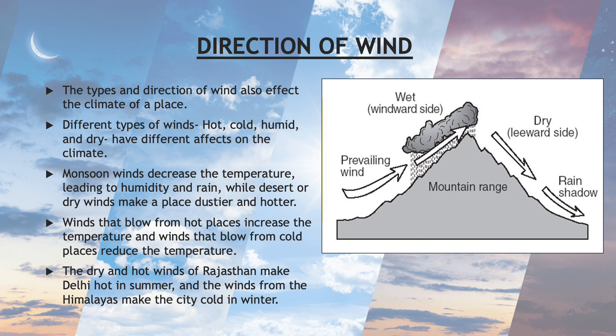Winds that blow from hot places increase the temperature and winds that blow from cold places reduce the temperature. The dry and hot winds of Rajasthan make Delhi hot in summer, and the winds from the Himalayas make the city cold in winter.